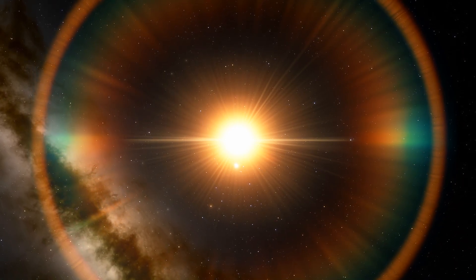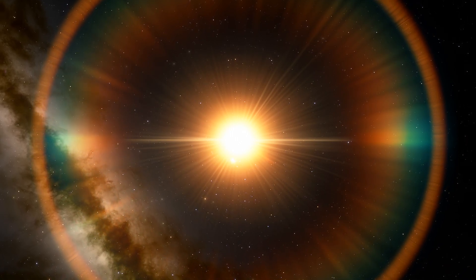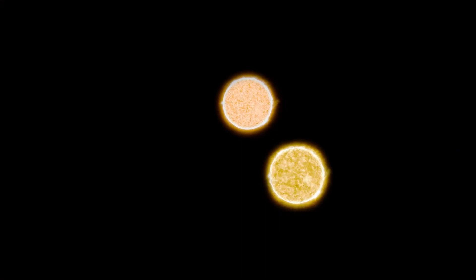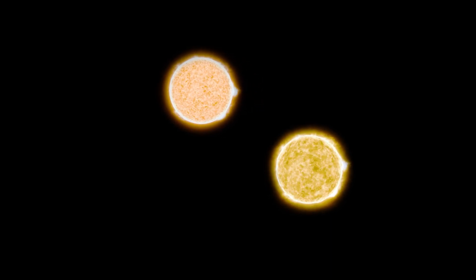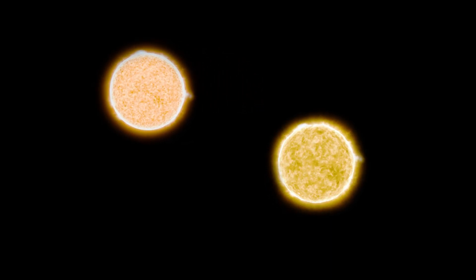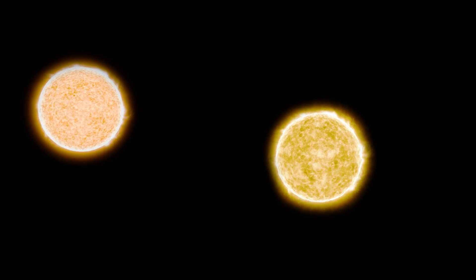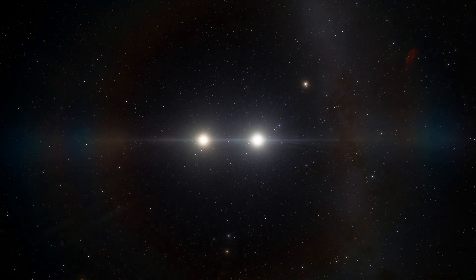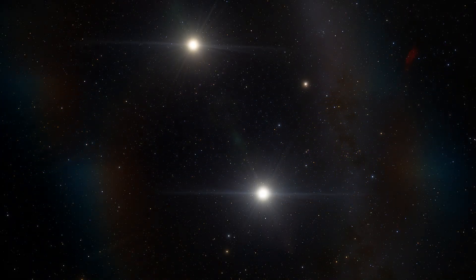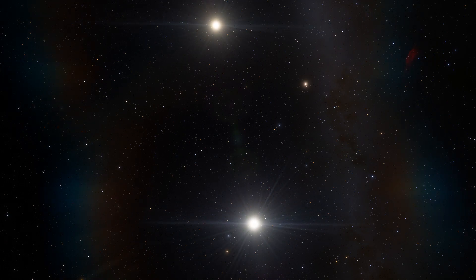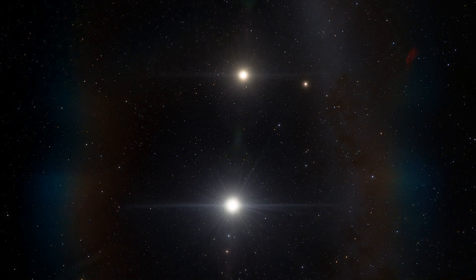The two main stars, Alpha Centauri A and Alpha Centauri B, belong to the main sequence and are close in characteristics to the Sun. The age of the system is estimated as 6 billion years. It's more than the age of the Sun, which is 4.5 billion years.